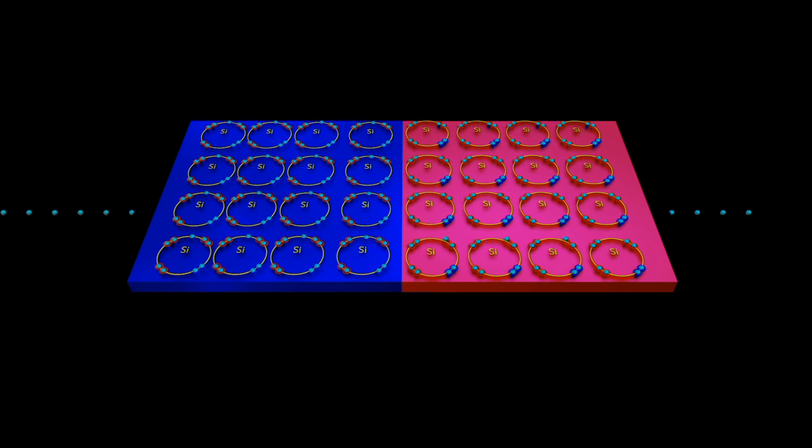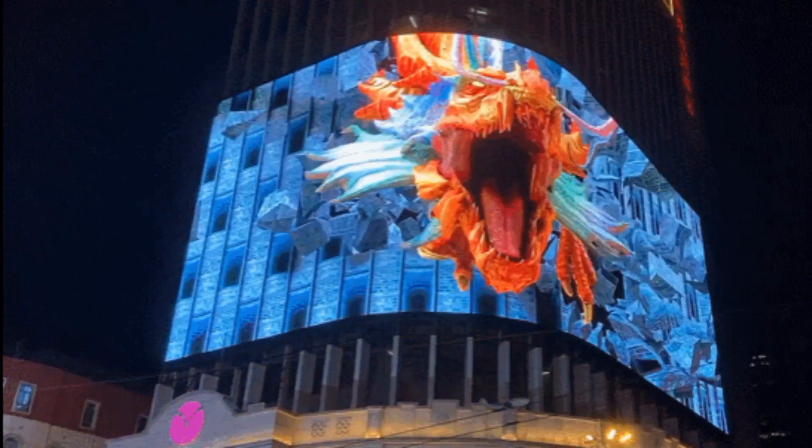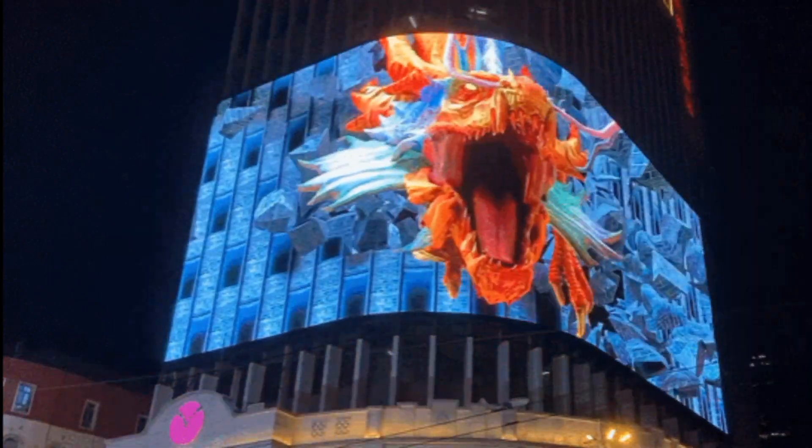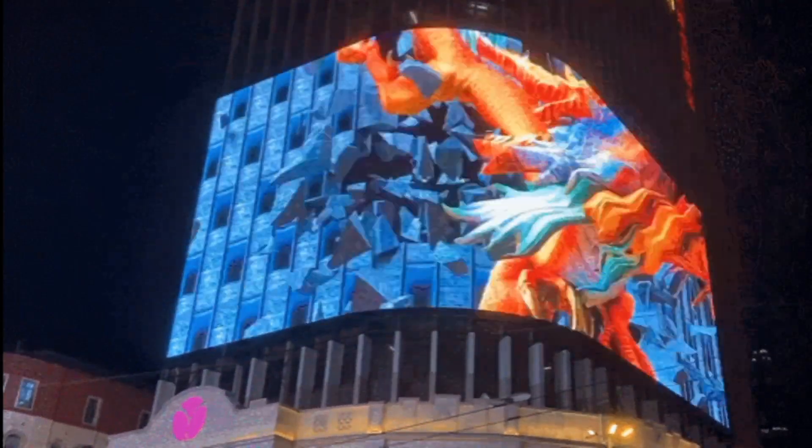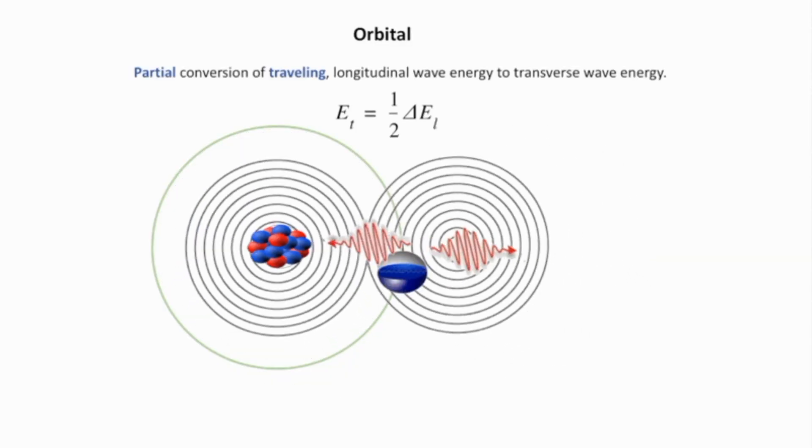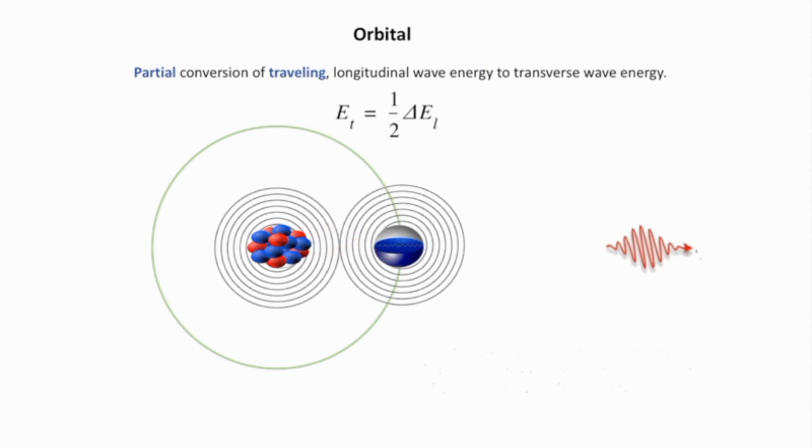But how? Where do these photons come from? This is through spontaneous emissions of photons within materials such as semiconductors. In the context of LEDs, photons are generated when electrons recombine with the electron holes in the semiconductor material.